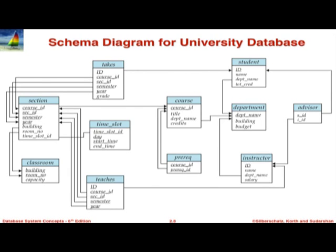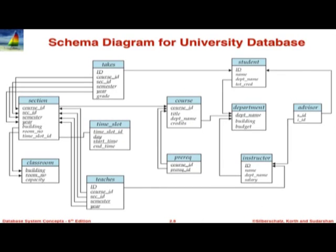We are assuming that every time this section meets it is going to be in exactly the same room and building in that particular semester. There may be another offering (another section) which may meet somewhere else. The building and room number are foreign keys into a classroom relation, where a classroom is uniquely identified by building and room number, and has one extra attribute: capacity. We want to make sure that enrollment of a course is less than or equal to the capacity of the classroom. This is not a constraint we can specify in SQL — it is usually left to the application programmer to enforce when students are added to a course.